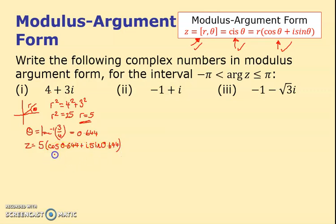Next one: this is -1 + i, so -1 across, 1 up. Two jobs: find the radius r² and ignore the minuses. It's 1² + 1² = 2, and therefore r is √2. The angle that I will find will be this angle, so θ is the inverse tan—again ignore the minuses, just do 1 divided by 1—and if you do that you get π/4.